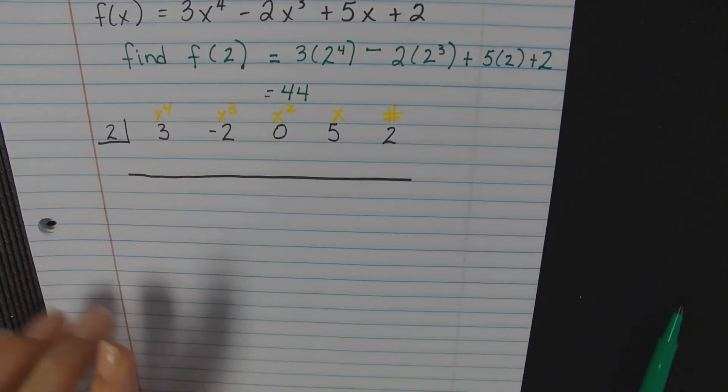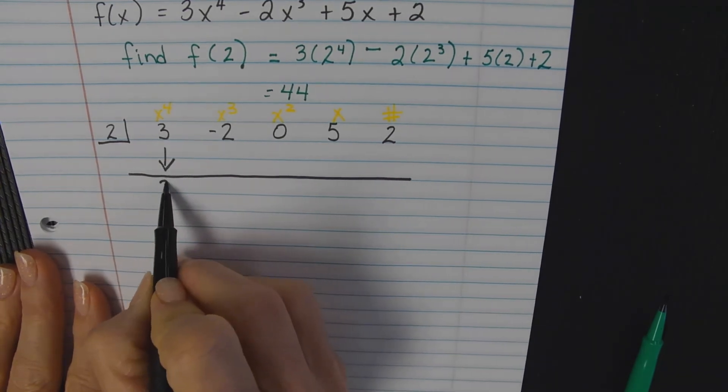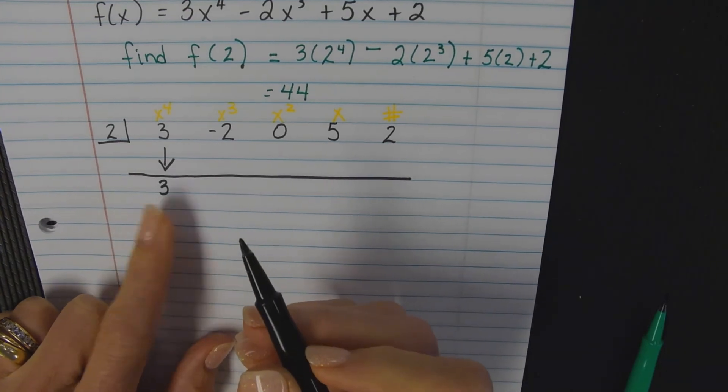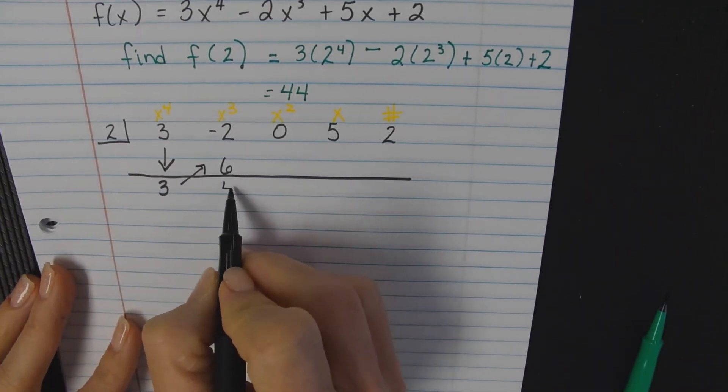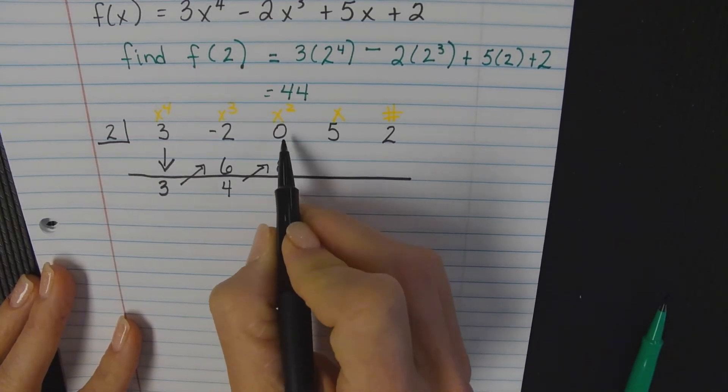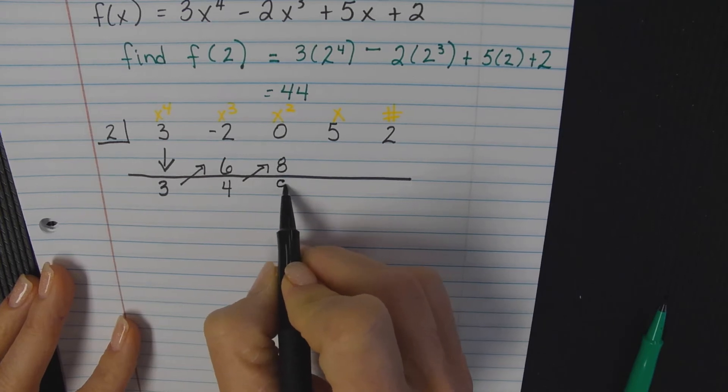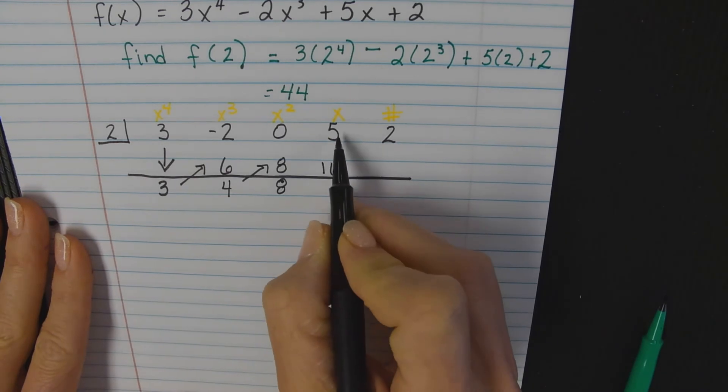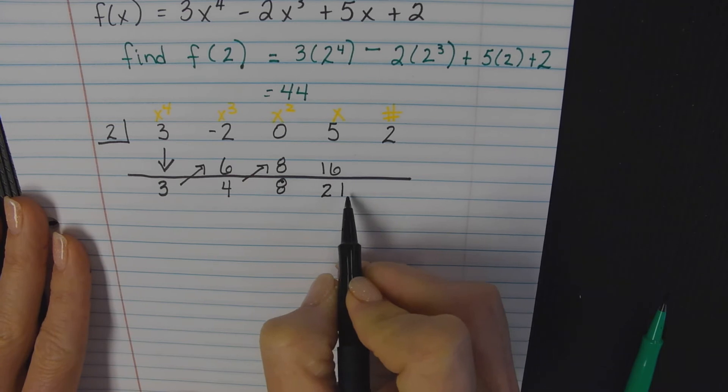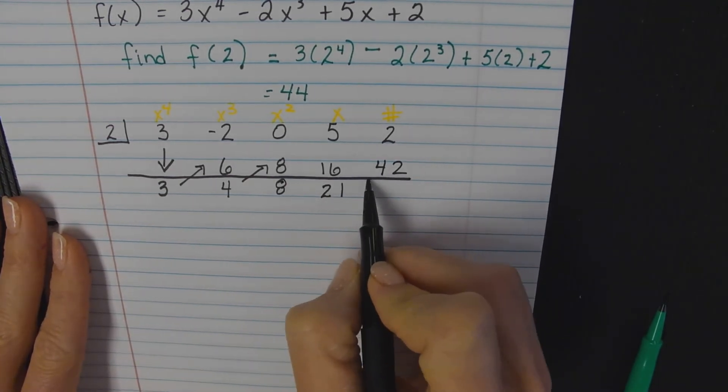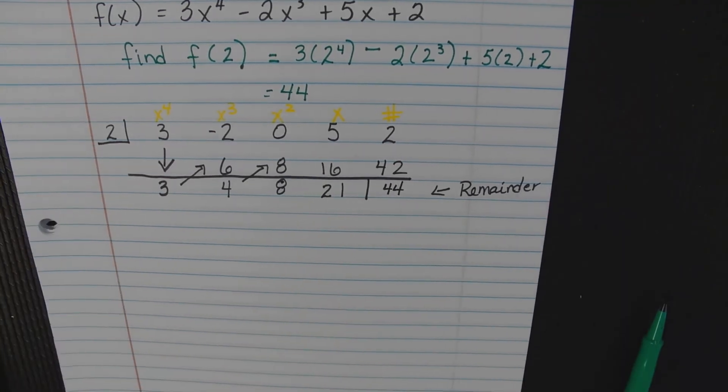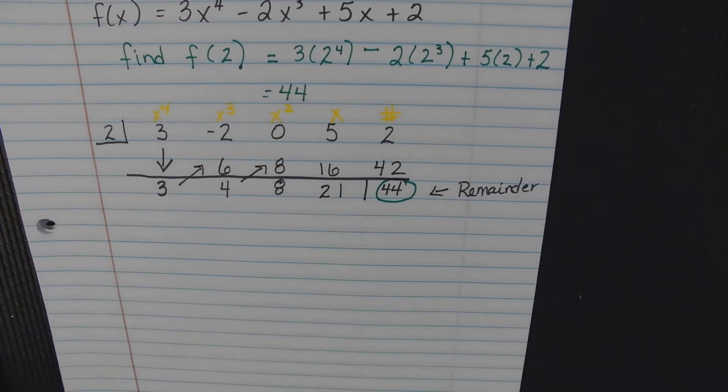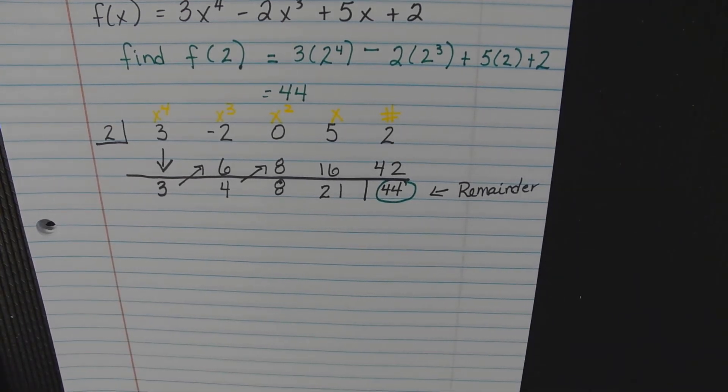Let me scoot this up. Now let's do synthetic division. Where did this 2 come from? That 2 right there. All right, so bring the 3 down. Let's do this together and let's just review synthetic division also. What do I do with this 3? Which is what? 6. Now we're going to add negative 2 plus 6, you get 4. 4 times 2 is 8. Add 0 plus 8, you get 8. 8 times 2 is 16. 5 plus 16 is 21. 21 times 2 is 42. And I'm going to box this because I know this is my remainder. And what do we get? What do you notice? It's the same number. Therefore, do you see why it's called synthetic substitution? What would y'all rather do - plugging it in or doing synthetic division?